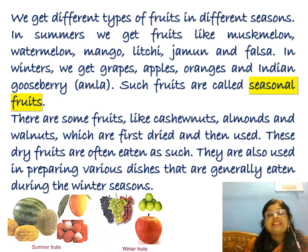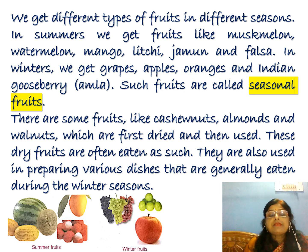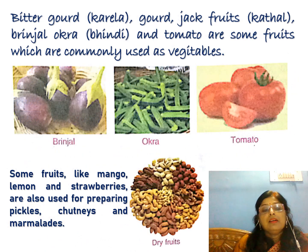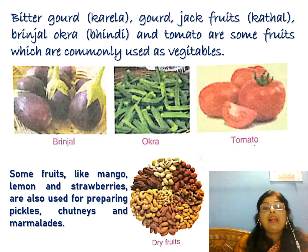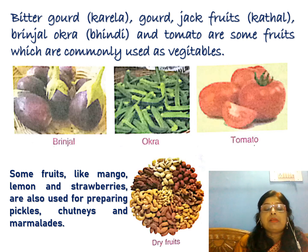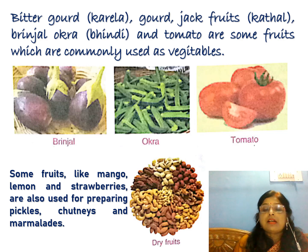Fruits are seasonal. There are some fruits like cashew nuts, almonds, and walnuts which are dry fruits and are used in special dishes. Some fruits are used as vegetables — for example, bitter gourd (also known as karela), jackfruit (kathal), brinjal, and okra. Some fruits like mango, lemon, and strawberries are also used for making pickles, chutneys, and marmalades.